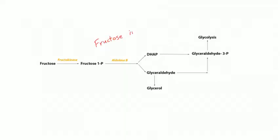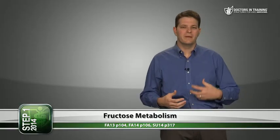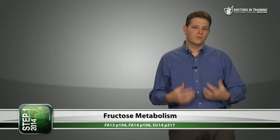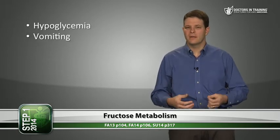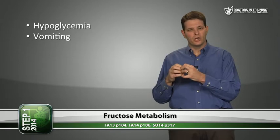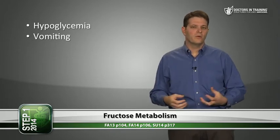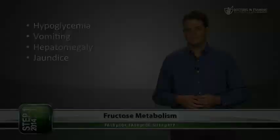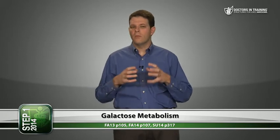The second fructose disorder is fructose intolerance, due to aldolase B deficiency. Fructose 1-phosphate accumulates, using up phosphates stuck to fructose. This inhibits glycogenolysis and gluconeogenesis, preventing correction of fasting hypoglycemia. Symptoms include hypoglycemia and vomiting after consuming fructose or sucrose (a glucose-fructose disaccharide), plus hepatomegaly and jaundice. Treatment is reducing intake of both fructose and sucrose.